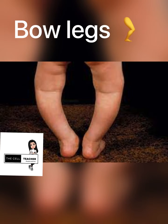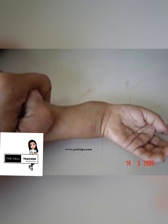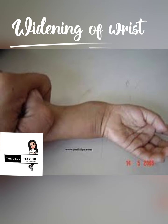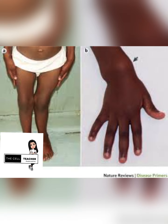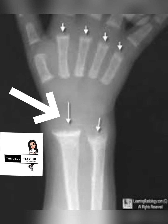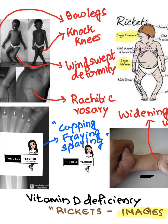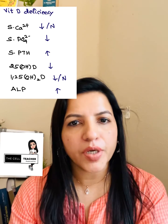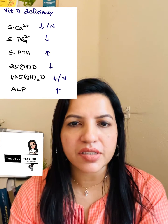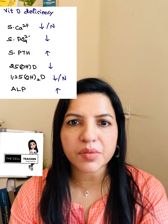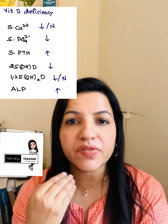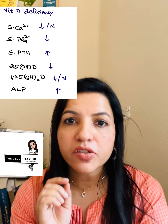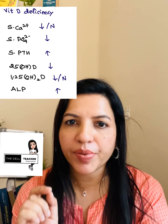They will present with the following clinical features. Looking at the biochemical profile in nutritional rickets — first is serum calcium. It is decreased, but sometimes it is normal or even slightly increased because of secondary hyperparathyroidism.